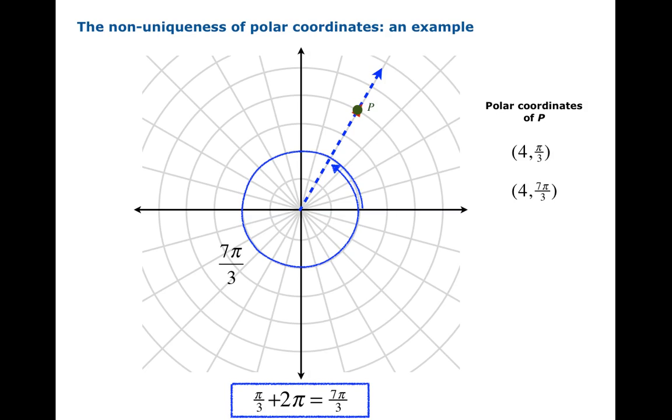So that's the second way to do it. And it's a different set of polar coordinates, but it's the same point. P is being represented by these two different sets of polar coordinates. And of course, that's not all.